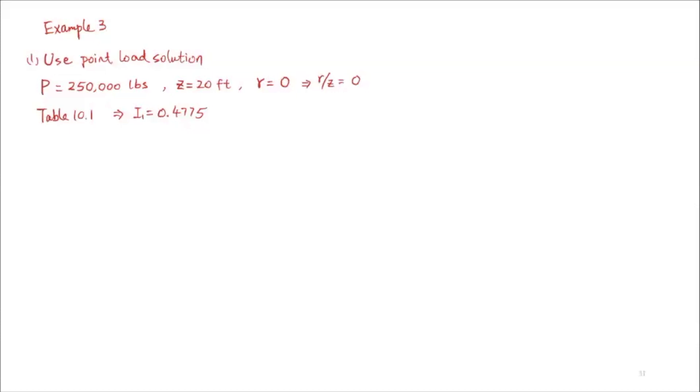The stress increase due to this point load is Δσz = P/Z² × I1, which equals 250,000 pounds over 20 feet squared times 0.4775. This gives us a stress increase of 298.4 pounds per square foot using the point load solution.